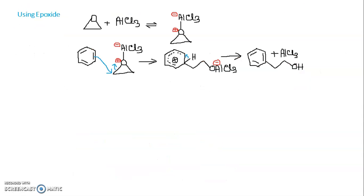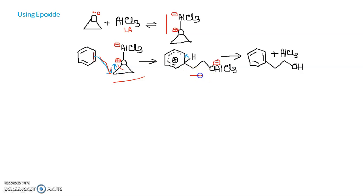Using an epoxide is another possibility. AlCl3 polarizes the C-O bond of ethylene oxide, since oxygen has a lone pair and AlCl3 is a Lewis acid, forming a polarized complex that acts as the electrophile. The pi electron cloud attacks one carbon of the ethylene oxide ring, the C-O bond breaks, a sigma complex forms, then the C-H bond breaks with hydrogen migrating to oxygen and AlCl3 being released. The final product is 2-phenylethanol and the Lewis acid is regenerated.